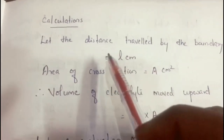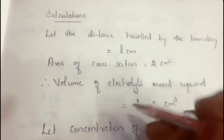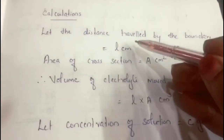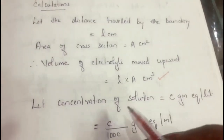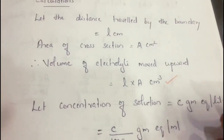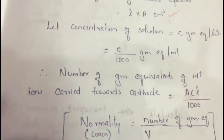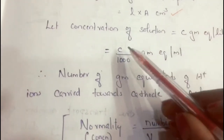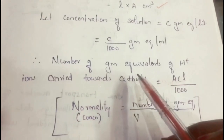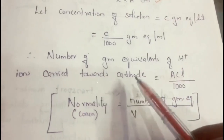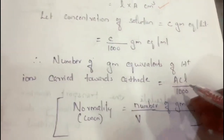Now let us discuss the calculations. Let the distance travelled by the boundary be L centimeters and the area of cross section be A centimeters squared. Then the volume of electrolyte moved upward is L × A centimeters cubed. Let the concentration of the solution be C gram equivalents per liter (e.g., 0.1 molar). Converted to milliliters, this is C/1000 gram equivalents per milliliter. Therefore the number of gram equivalents of H⁺ ions carried towards the cathode is A·C·L / 1000.